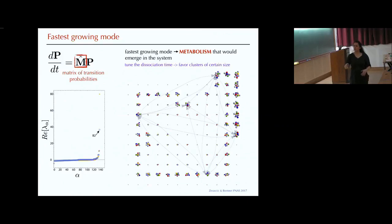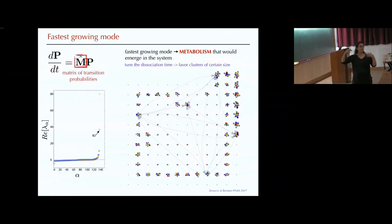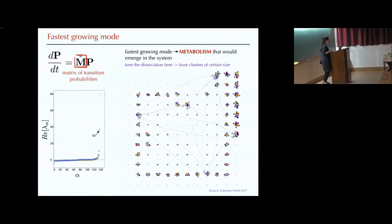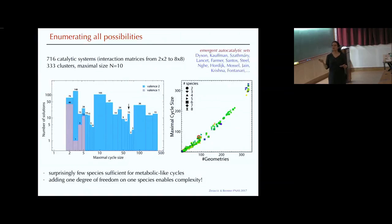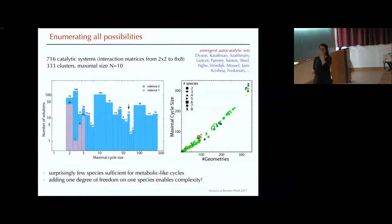Here the clusters are just arranged on a grid, but the lines are an example of a cycle that can form between those in the metabolic cycle. This is a calculation — we didn't do this in simulations, which would require much bigger runs. What we can do is go back to our database of clusters and interaction matrices and ask: what kind of catalytic systems can we actually get with all the designs we have available?